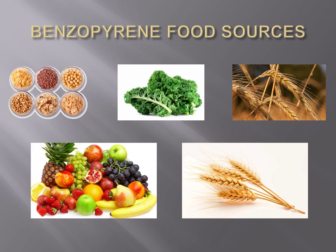Benzopyrene can also be found in a large quantity of foods. It can be found in cereal, for instance, when drying uses direct application of combustion gases. Other food sources, such as vegetables including kale, or fruits, can contain benzopyrene as a result of air pollution. Other common produce affected by benzopyrene air pollution includes wheat and rye.